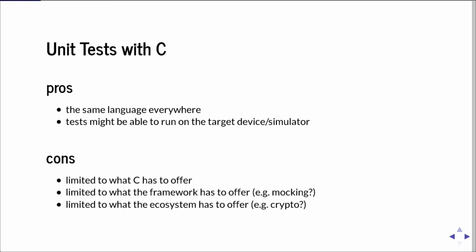But it's also a bit limited in some ways. You can only use C constructs, which are not as powerful as Python constructs. You need to write much more code than you could in a higher level language. You're also limited by what the framework has to offer — there are tons of C unit testing frameworks but most are very basic, with few offering mocking for example. And you're limited by the ecosystem: for example, testing cryptographic algorithms is much easier in Python with access to libraries like OpenSSL.